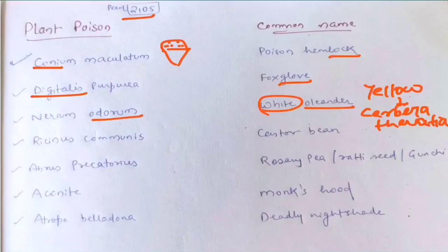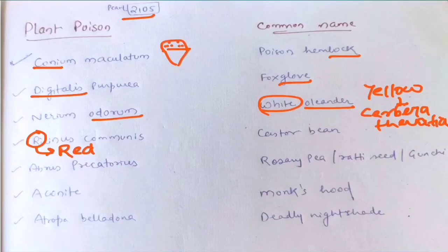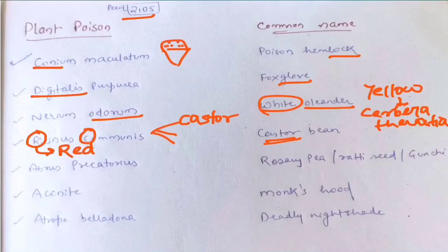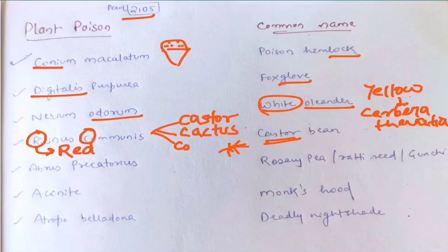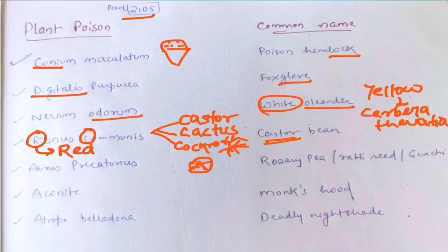The next is Ricinus communis. From the letter R, you can remember it is a red-colored plant. From C, you can remember three things: it is also known as castor; the plant looks like a cactus — very thorny; and the third C is for the fruit, which looks like a cockroach — very mottled. So R = red, C = castor, cactus-like plant, and cockroach-like seed.